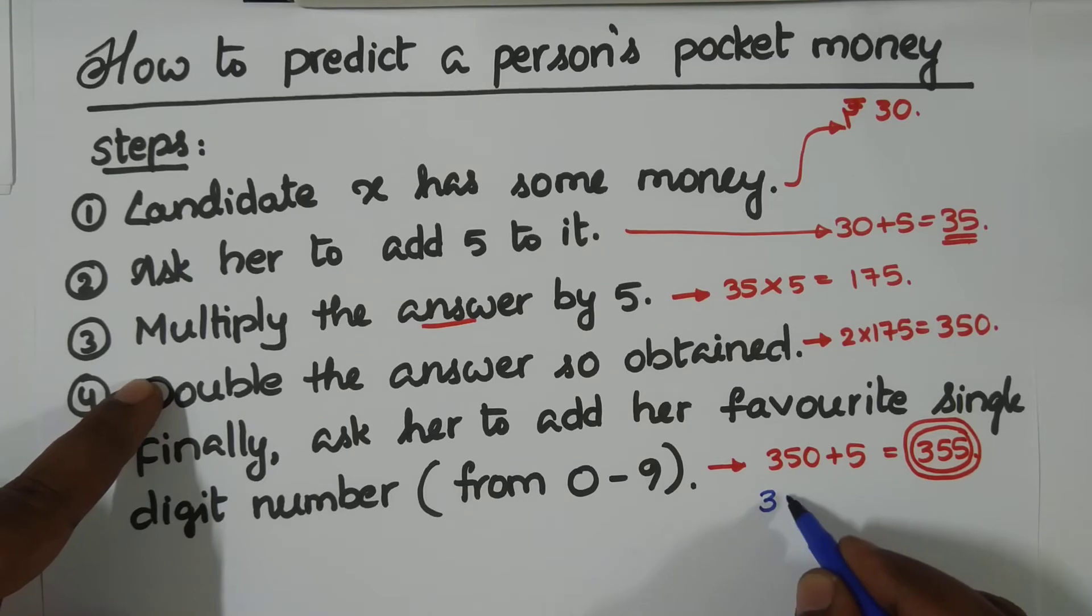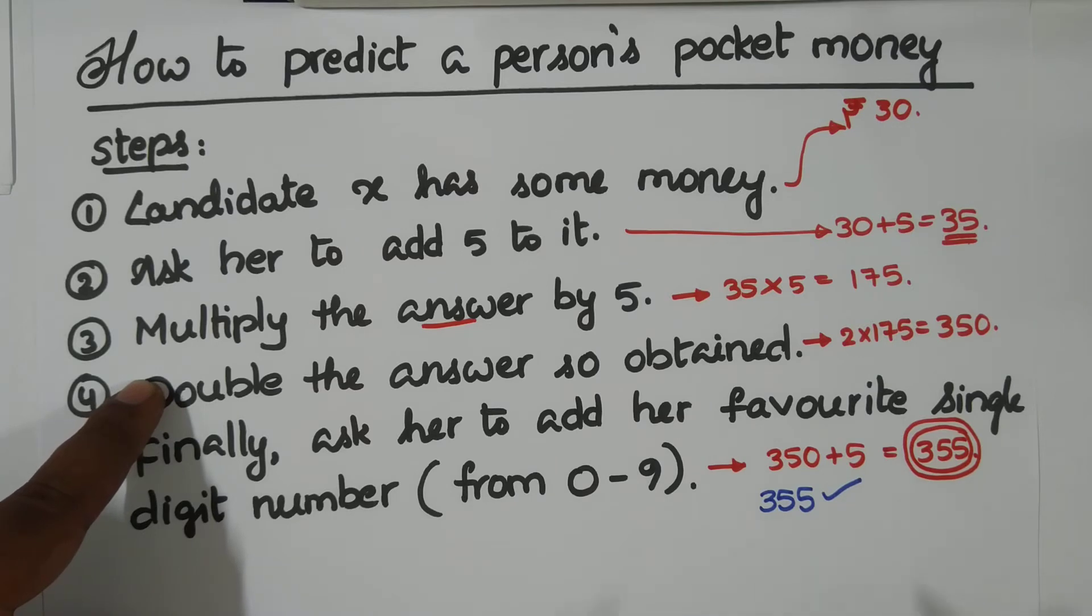Now you subtract five. But before you subtract five, just remove this last digit. Ignore this. Ignore the digit on the unit's place.